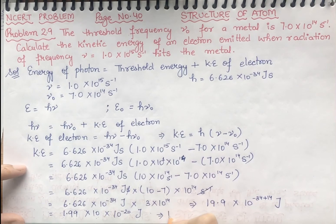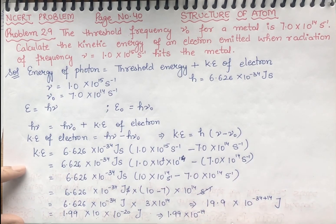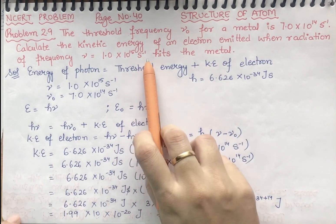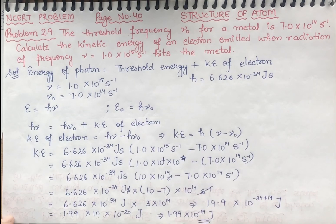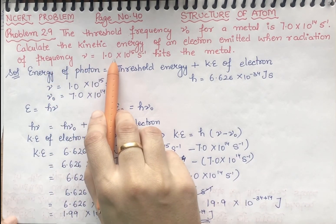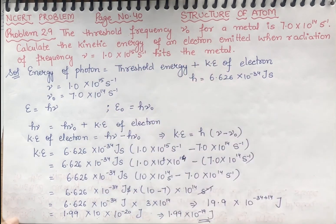So it will be 1.99 × 10⁻¹⁹ joule, and joule is the only unit of kinetic energy. Therefore, the kinetic energy of an electron emitted when radiation of frequency ν = 1.0 × 10¹⁵ s⁻¹ hits the metal is 1.99 × 10⁻¹⁹ J.